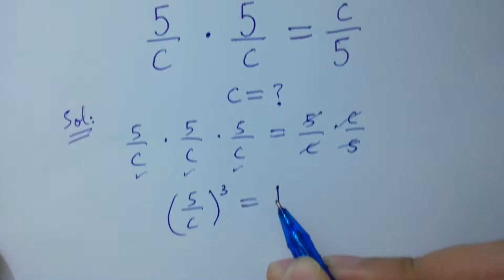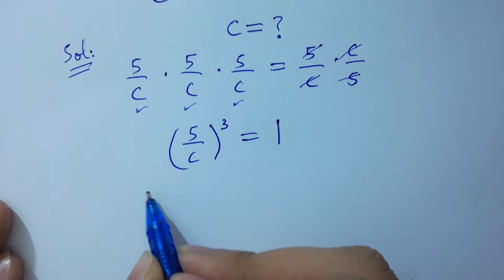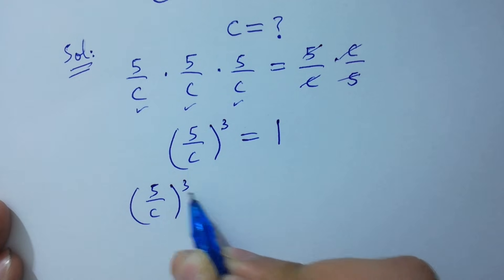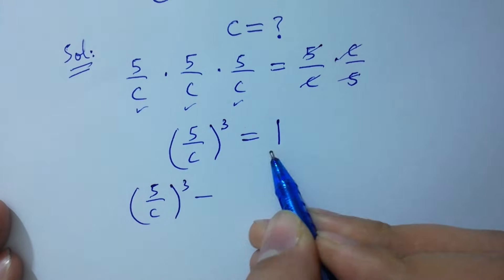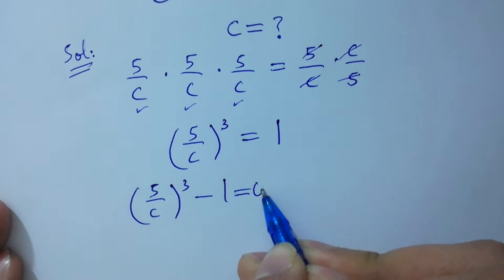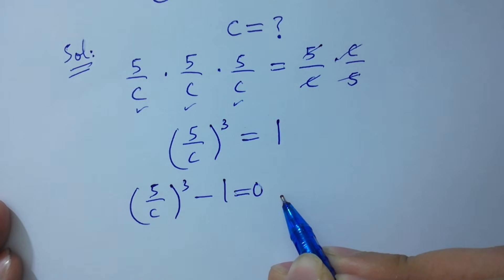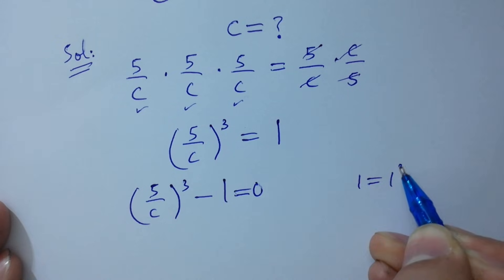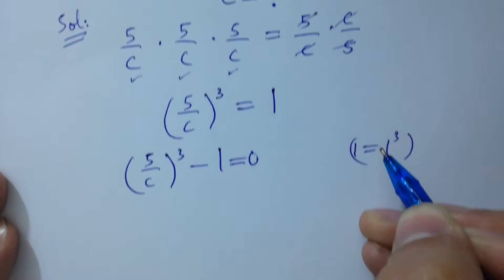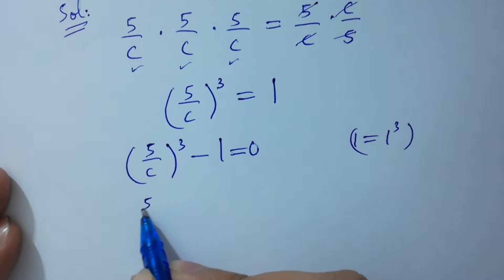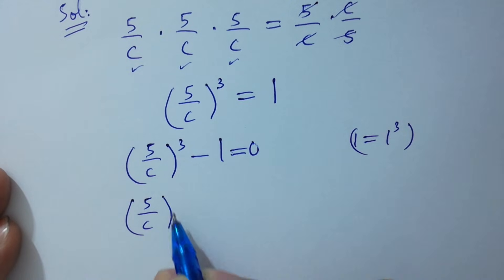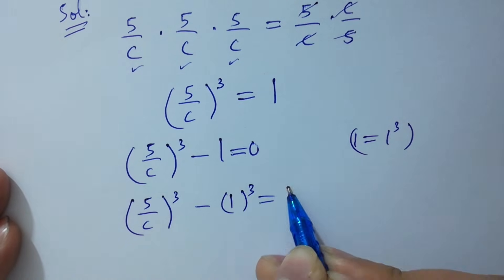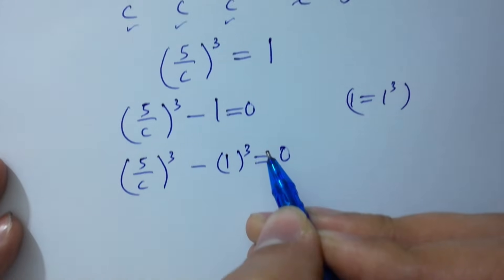We get 1. So 5 over c cubed minus 1 equals 0. Since 1 equals 1 cubed, it will be 5 over c cubed minus 1 cubed equals 0.